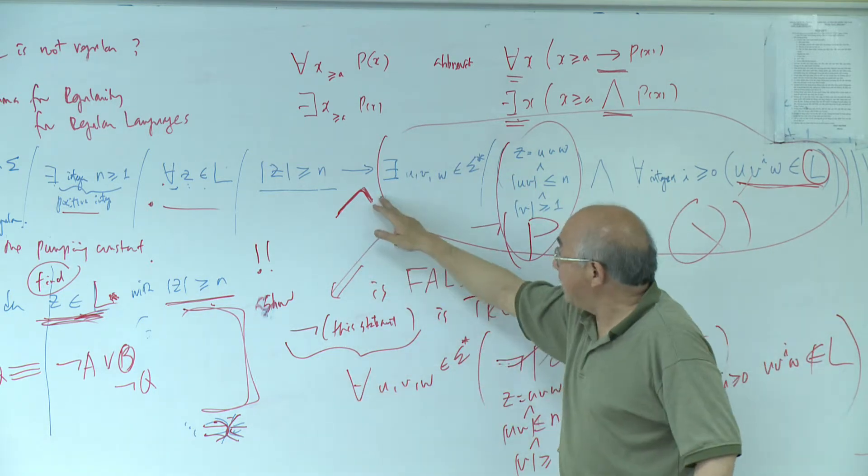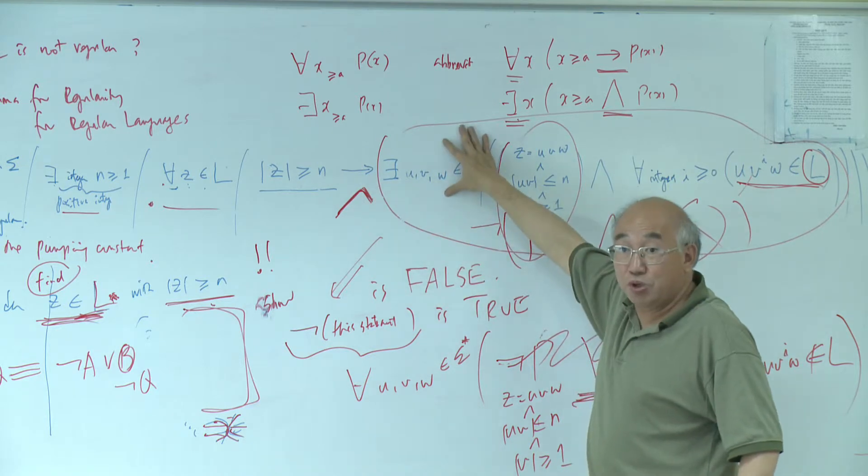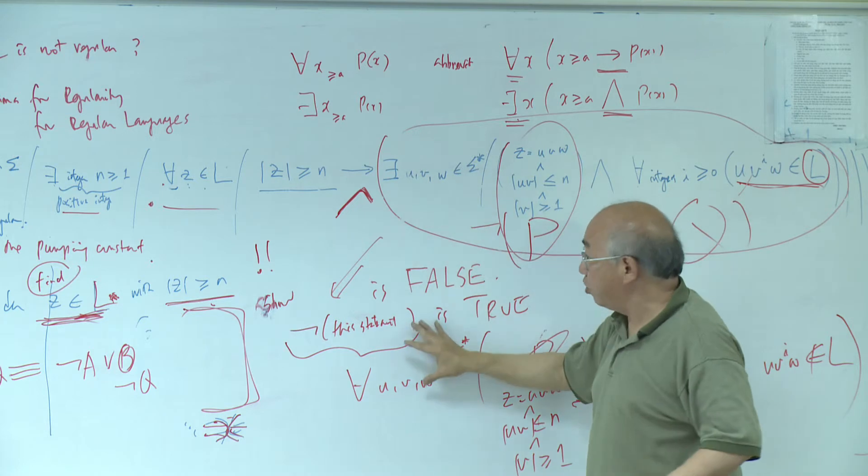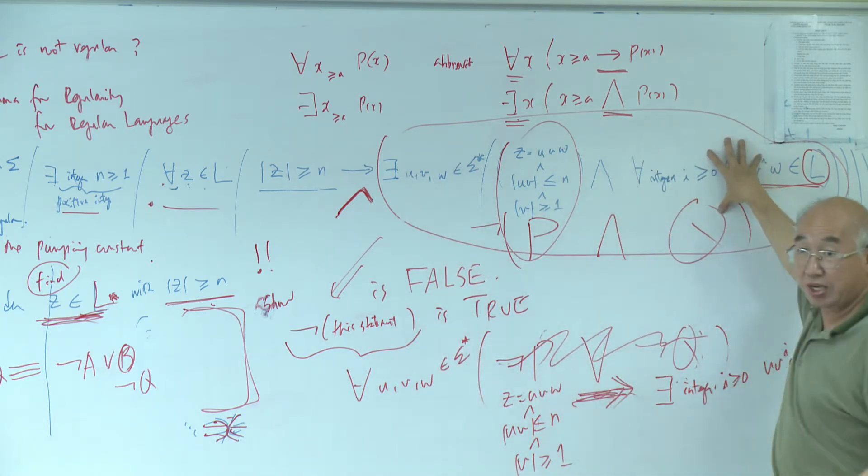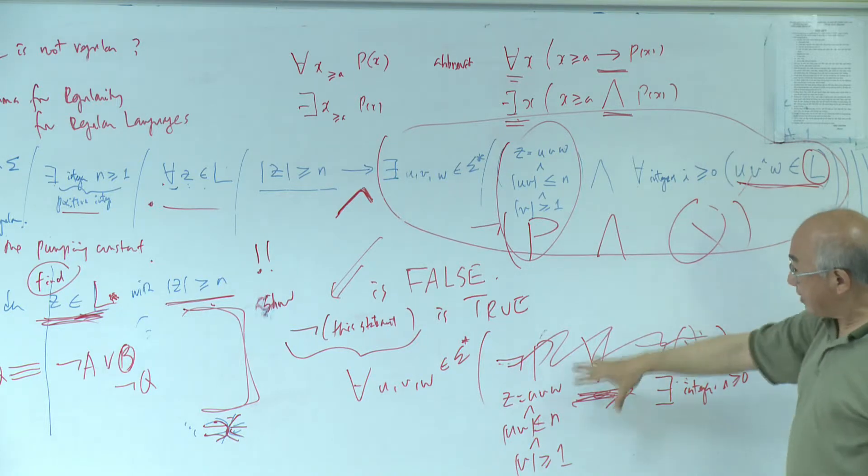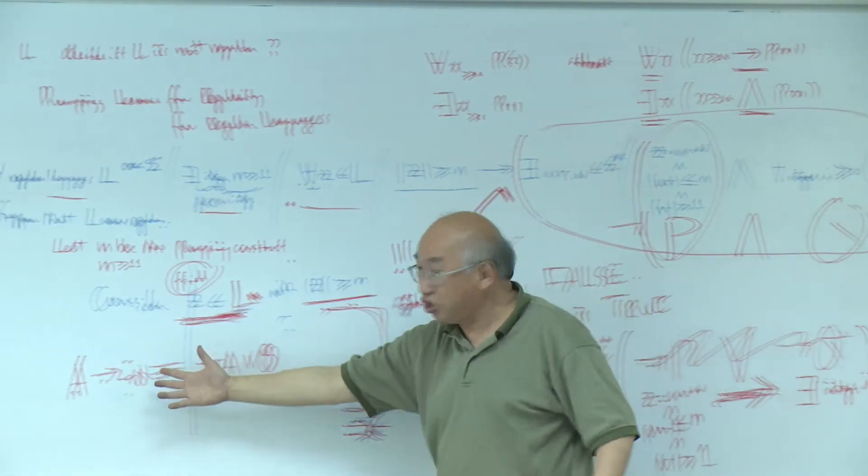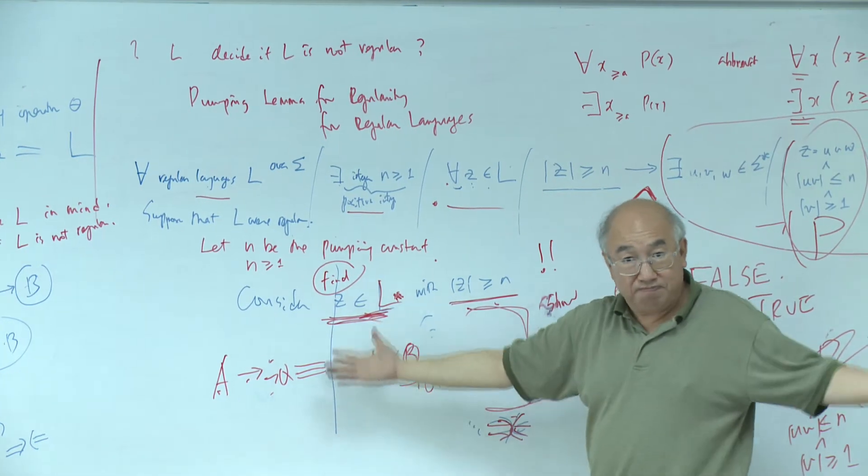So I negate this. How do I negate this existentially quantified statement. Boom. All of a sudden it becomes universally quantified. And then we are going to show that this condition is false. So basically everything is just interpretation of the logic.